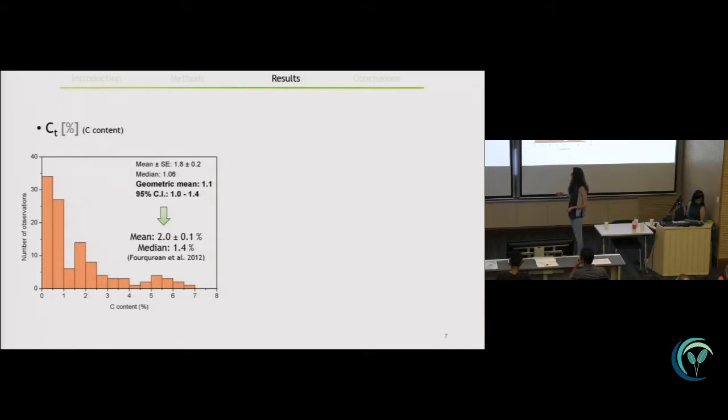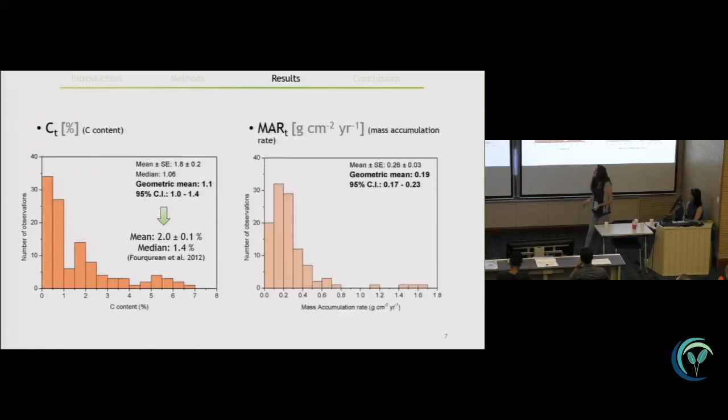than that reported by Jim Fourqurean in 2012 in his global review of seagrass carbon stocks. So the median is slightly lower, but we could say that our data set is kind of representative of the carbon content that is in seagrass